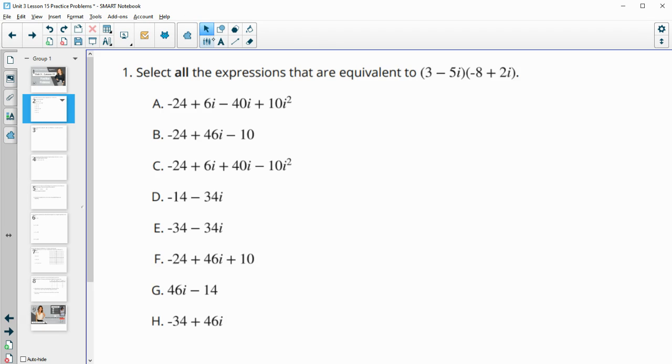Number one says select all expressions that are equivalent to the product of these two binomials. Since all of these are written out horizontally, I'm just going to do distributing.